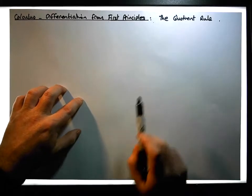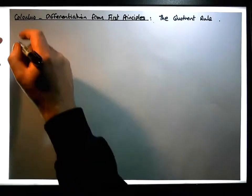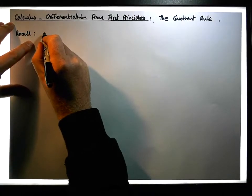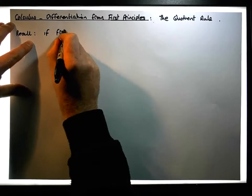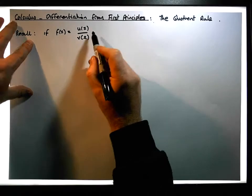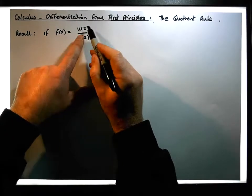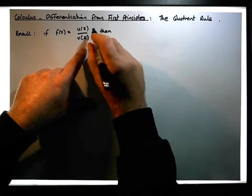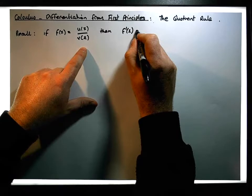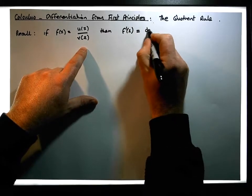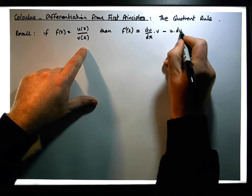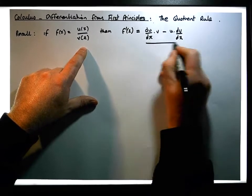Let's first recall what the quotient rule says. If we have a function f of x equal to u of x over v of x, and importantly, if u of x and v of x are both differentiable functions, then f prime of x, the derivative of f with respect to x, is equal to du/dx times v minus u times dv/dx, all over v squared.